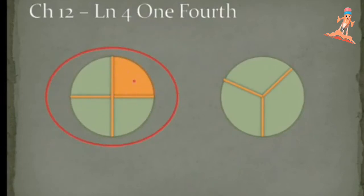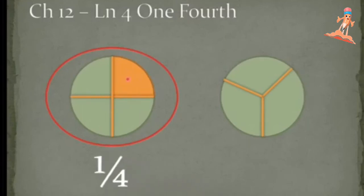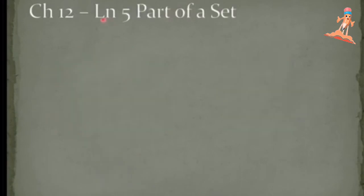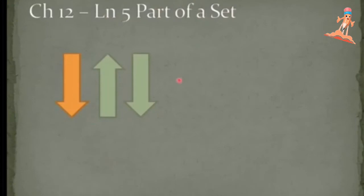Which one is correct? This one. Now, if I am going to color one part, then we have one fourth. Good job, kids! Now the last lesson in our revision — Lesson 5: Part of a Set. Tell me, how many arrows are here? One, two, three.